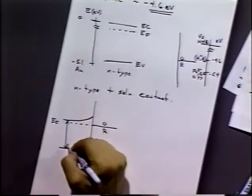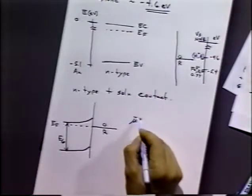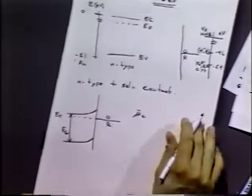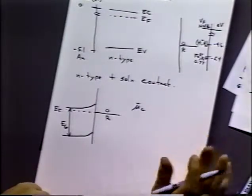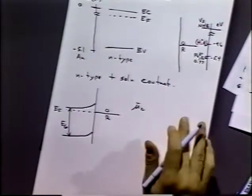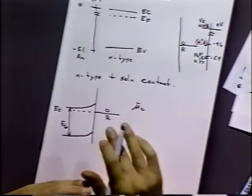The gap has not changed. The reason we get the bending is that the electrochemical potential for both phases now has to be equal, which must be true at equilibrium. If the Fermi level of the semiconductor lies above that of the solution, electrons from the semiconductor must be transferred into the solution, because those electrons have a higher energy.